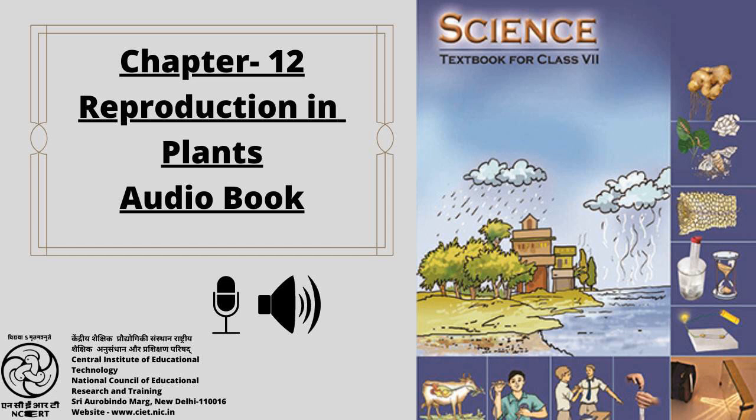In asexual reproduction, new plants are obtained without production of seeds. Vegetative Propagation is a type of asexual reproduction in which new plants are produced from roots, stems, leaves and buds. Since reproduction is through the vegetative parts of the plant, it is known as vegetative propagation.